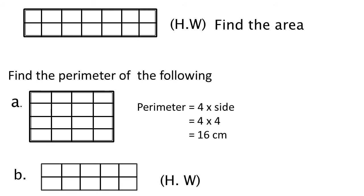Next, find the perimeter of the following. We found the area of some figures; now we will find out the perimeter. We are asked to find out the perimeter of a square. Each side is 4 centimeter because there are 4 squares. Perimeter of square is equal to 4 into side. So, 4 into 4 is equal to 16 centimeter. 16 centimeter is the perimeter of figure A.